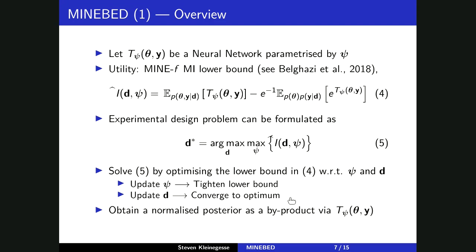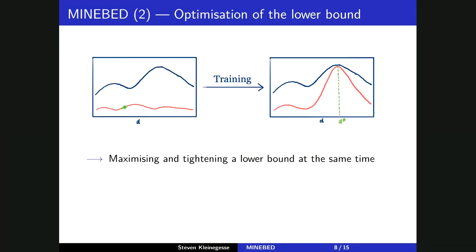Getting the posterior as a byproduct is quite helpful since posterior inference for implicit models is very difficult. Before training, our lower bound will be all over the place and not match the true MI. But after training, we have found the optimal design at the global optimum of the true MI, and our lower bound is tight at the optimal design. This amounts to simultaneously maximizing and tightening a lower bound.